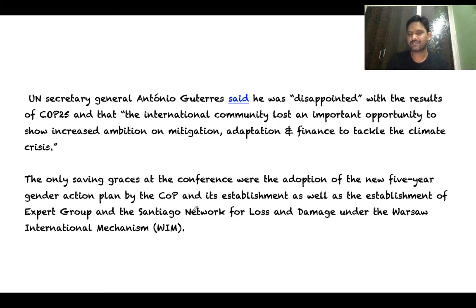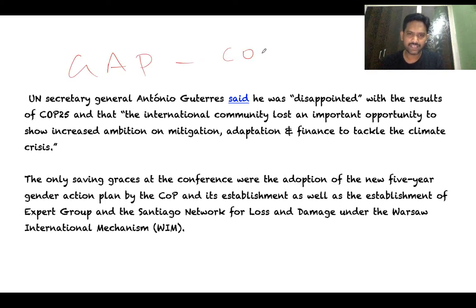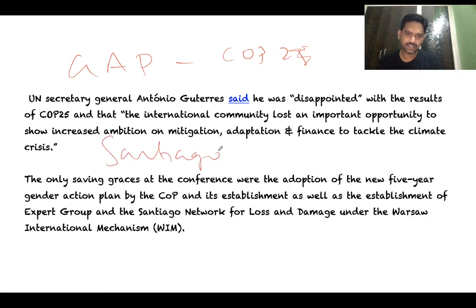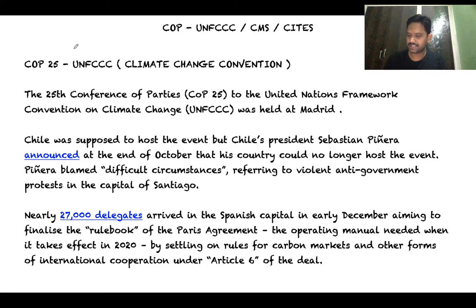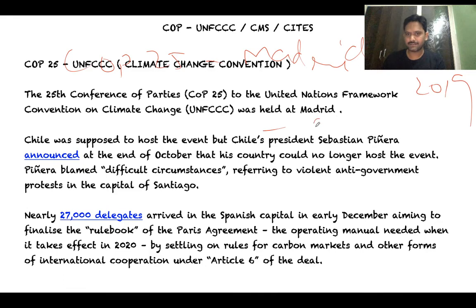The only saving graces at COP25 were the adoption of a new five-year gender action plan and the Santiago Network for Loss and Damage. To summarize: COP25 was hosted by Madrid in December 2019, initially supposed to be held in Chile but shifted due to anti-government protests. The key point to remember is COP25 was held in Madrid.